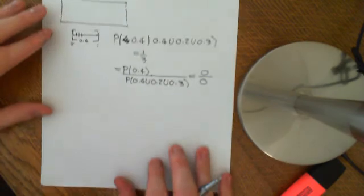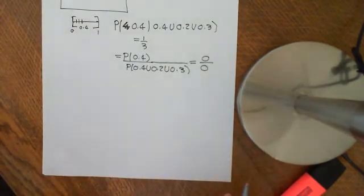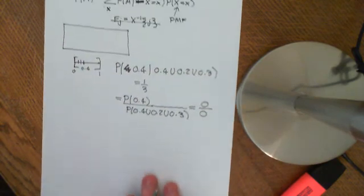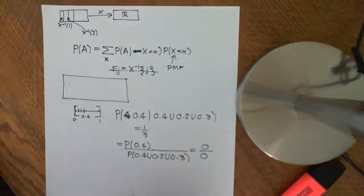And that's where we have to be very, very careful when we condition on events in continuous probability spaces. So now, with that warning, let's look at the law of total probability for a continuous random variable.